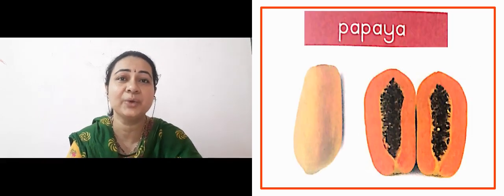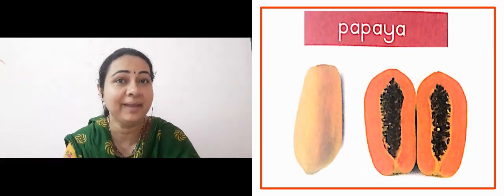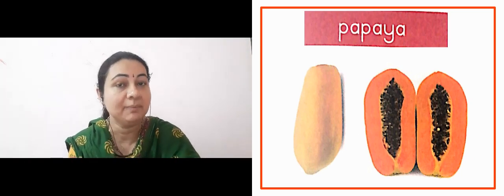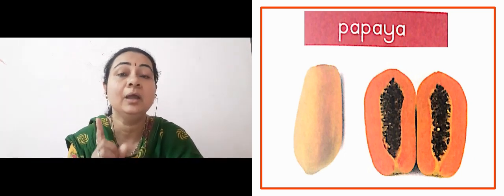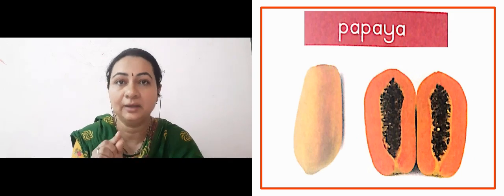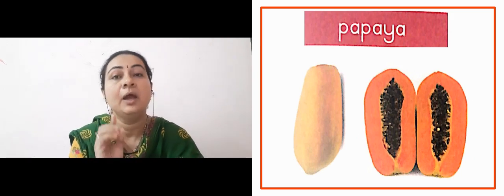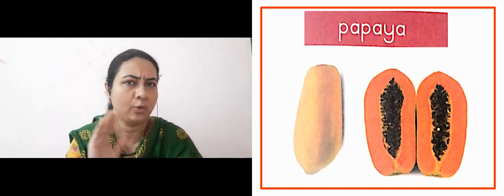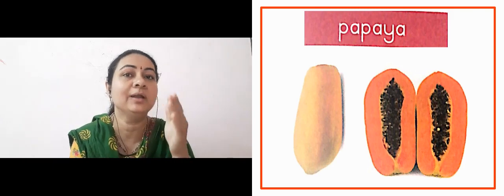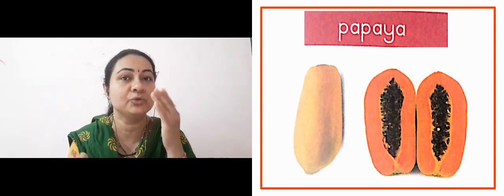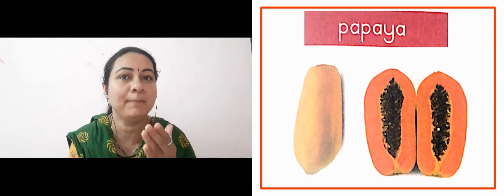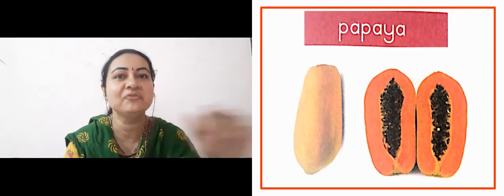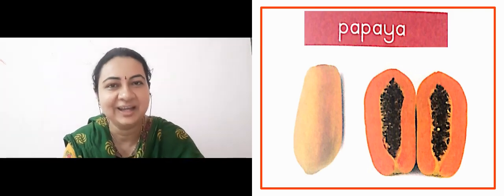The next lady is showing us papaya. This is a ripe papaya. It is also available raw, which is green in color. But this ripe fruit is of yellow and orange color, and once you cut the ripe papaya, it is of orange color inside.